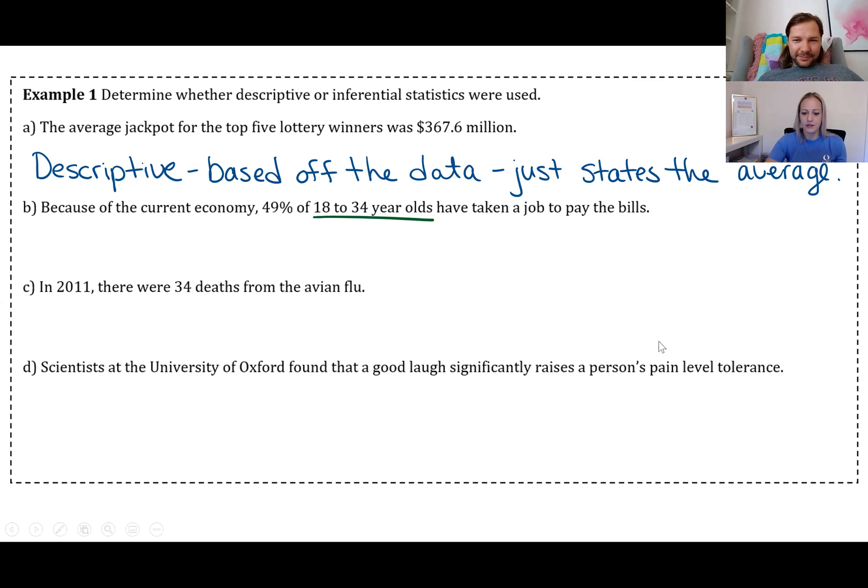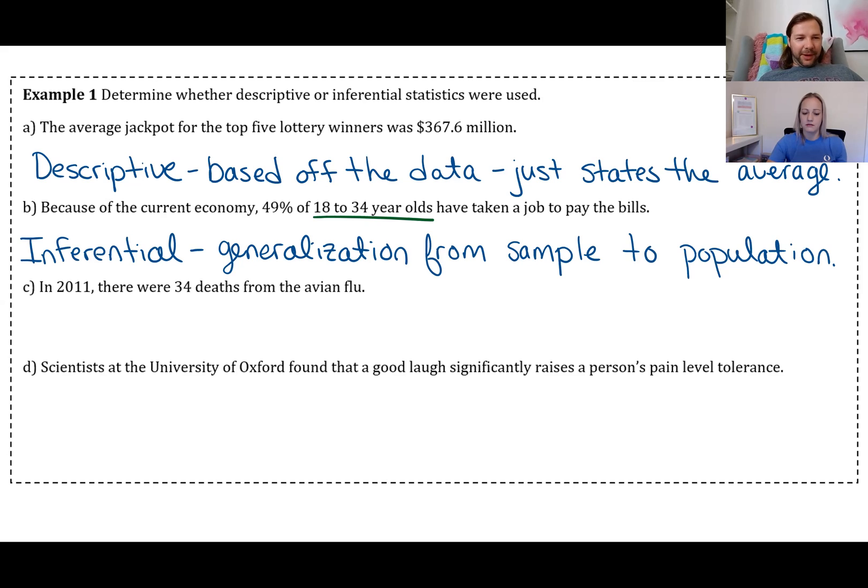Part B says because of the current economy, 49% of 18 to 34 year olds have taken a job to pay the bills. If you look at what that statistic is about, it's 18 to 34 year olds, so that would basically be your population. Since it would be impossible to actually have collected data from every single 18 to 34 year old, that tells us that that's an inferential statistic. Basically we're generalizing from that sample to the entire population.